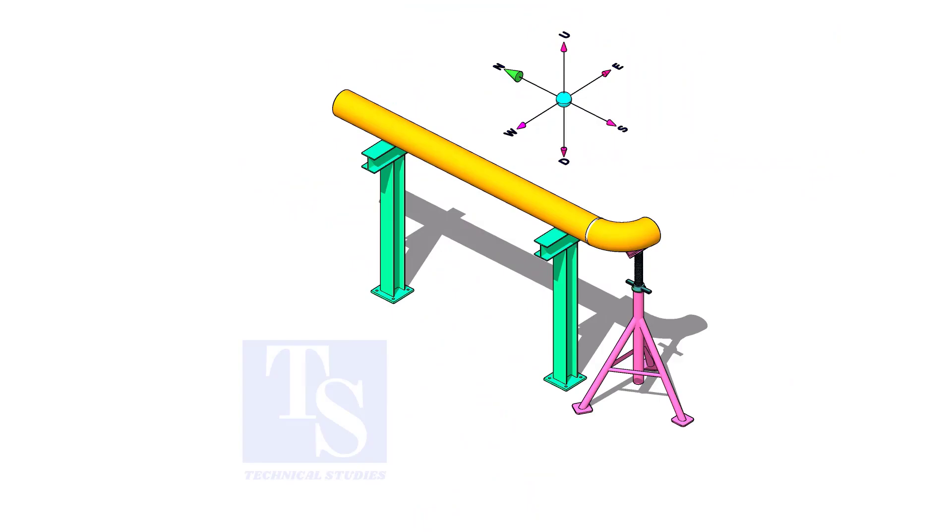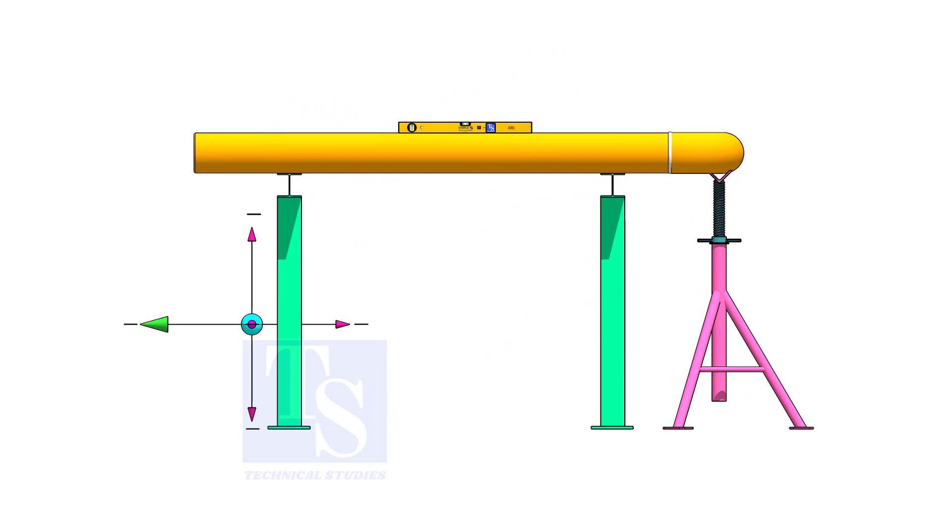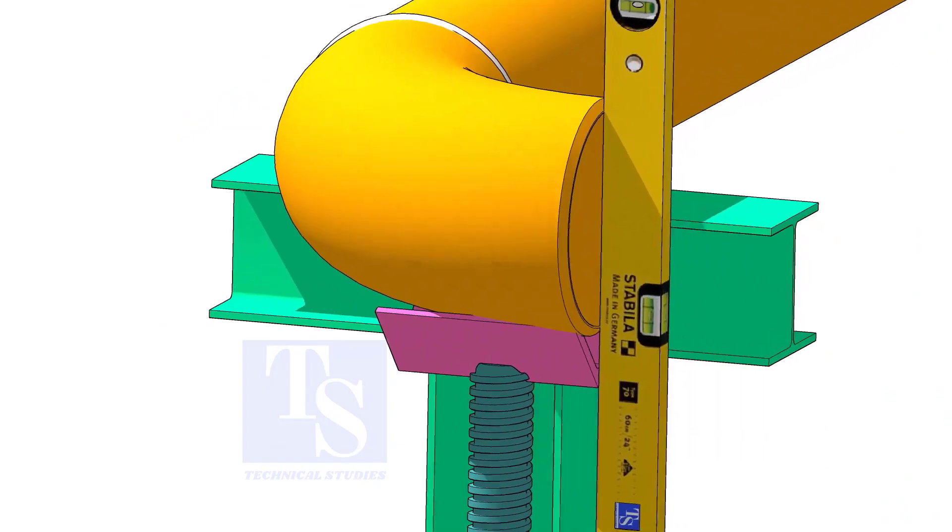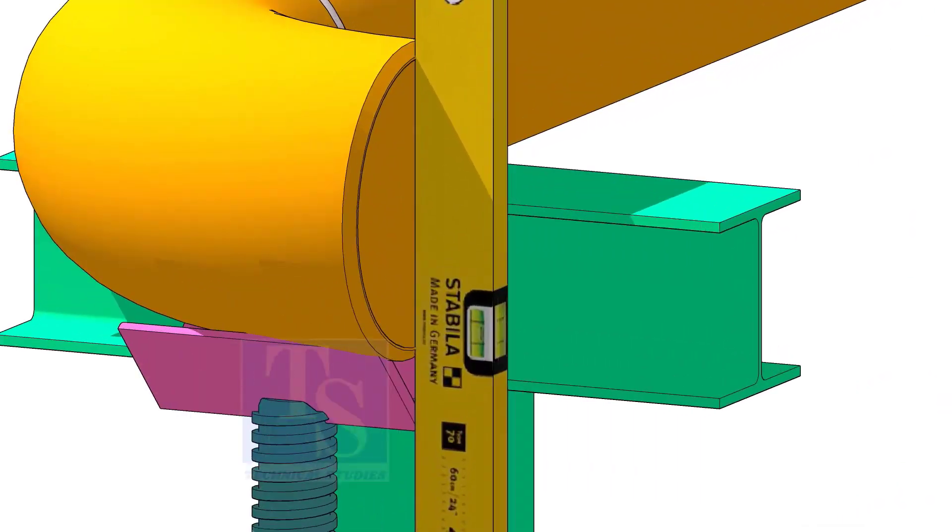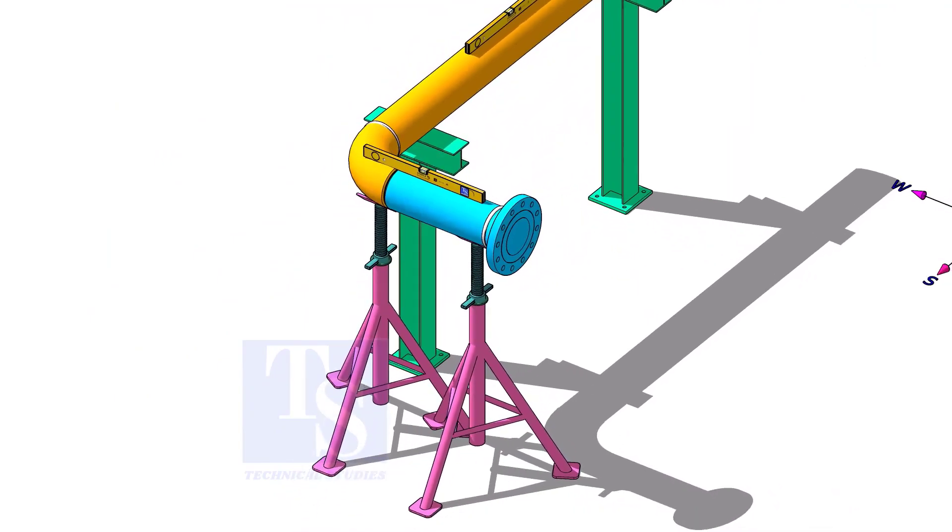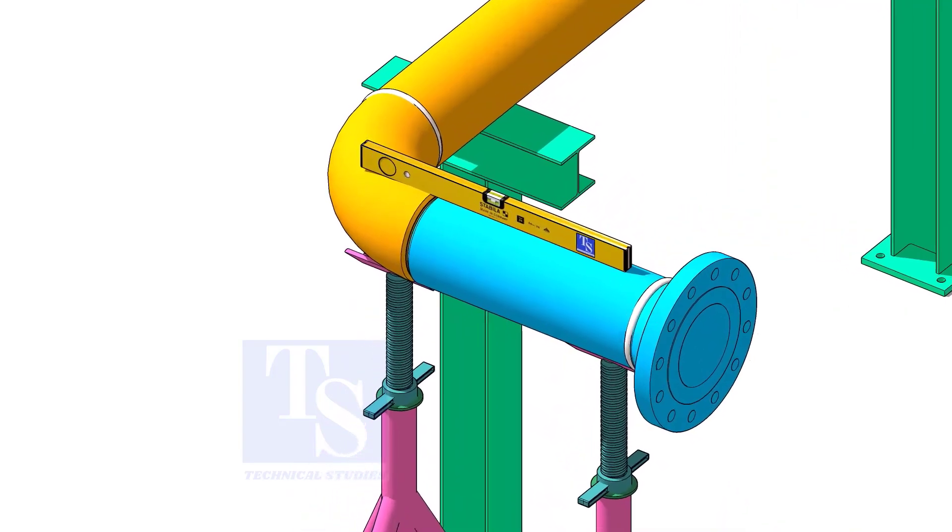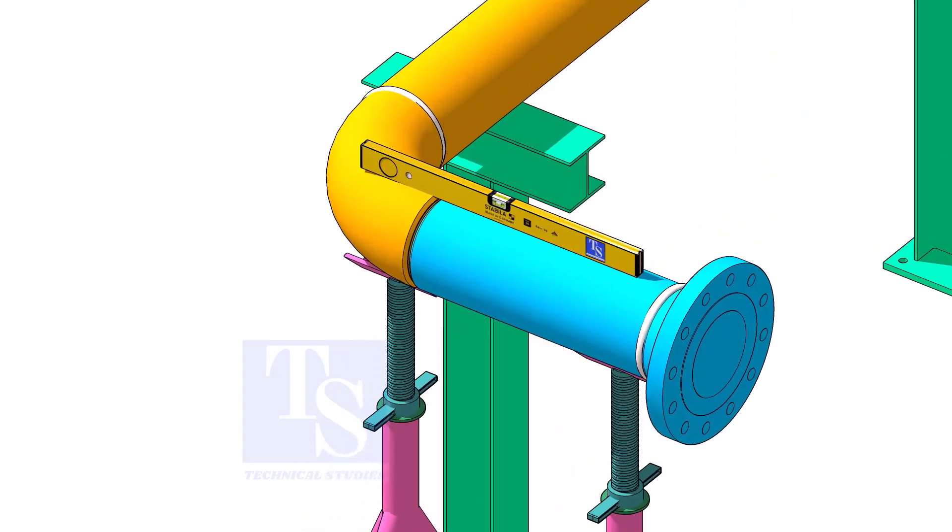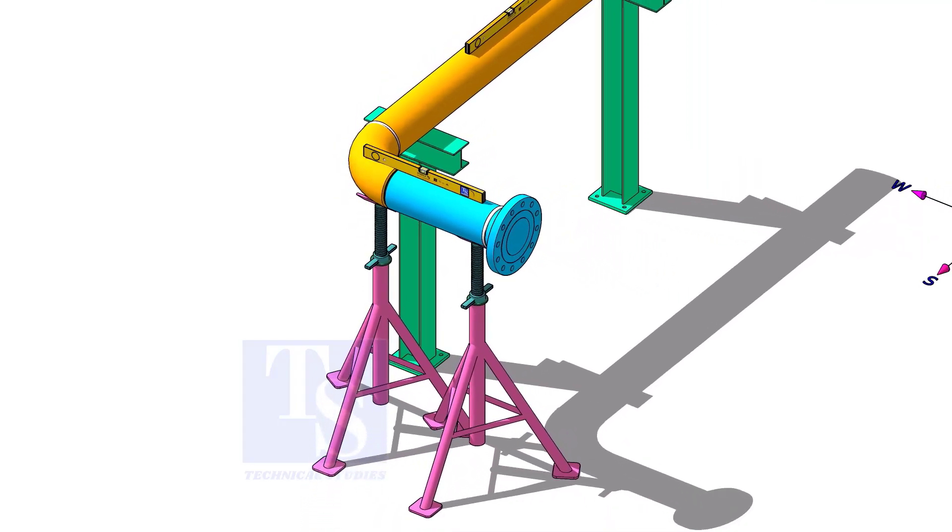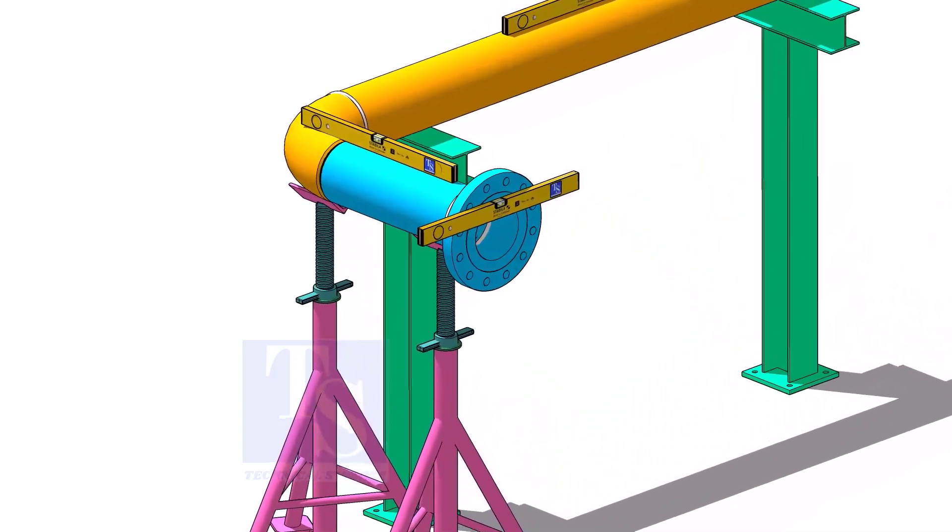Put spool three on its location and check the level of the pipe. Put spool number two in its position and level it. Correct the overall plumbness.